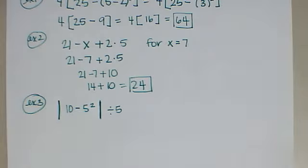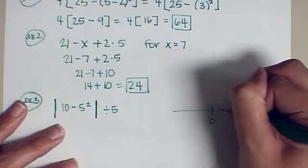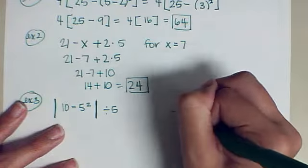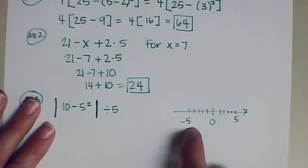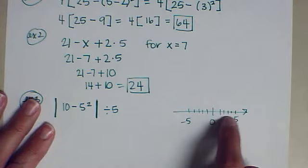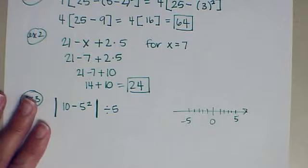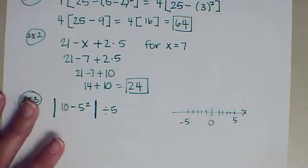Now, absolute value means take the positive of. Actually, it technically means the distance from 0. So if I thought about a number line and I have 0 right here, and this is 5, and this is negative 5, the absolute value of negative 5 is 5 because it is 5 away from 0. The absolute value of 5 is also 5 because it is also 5 away from 0. So distance is always a positive measure. So think of absolute value as positive numbers, making something positive.